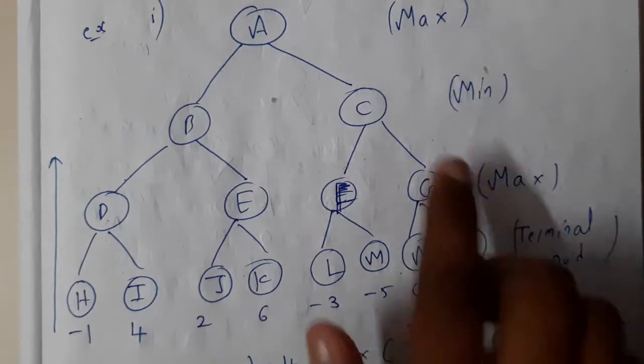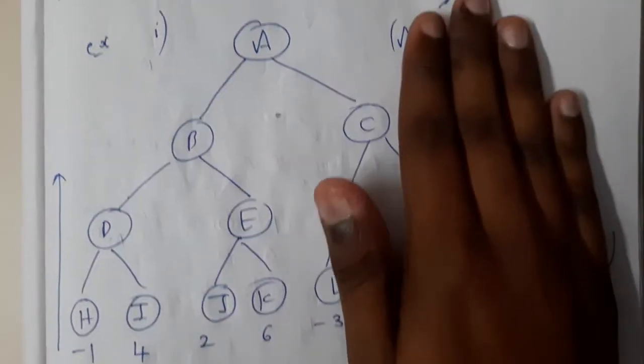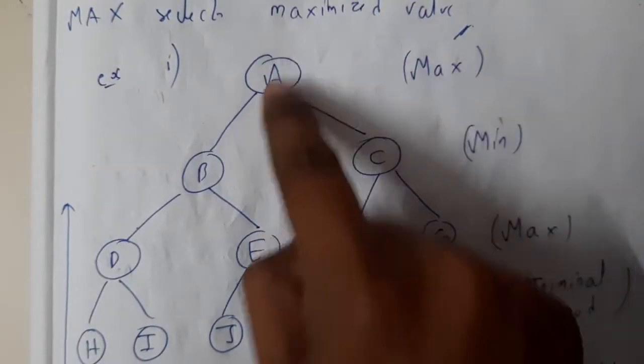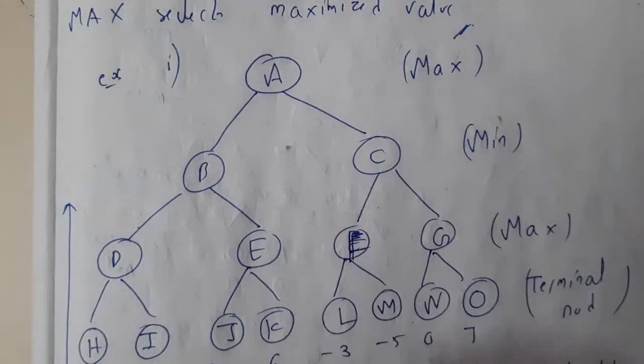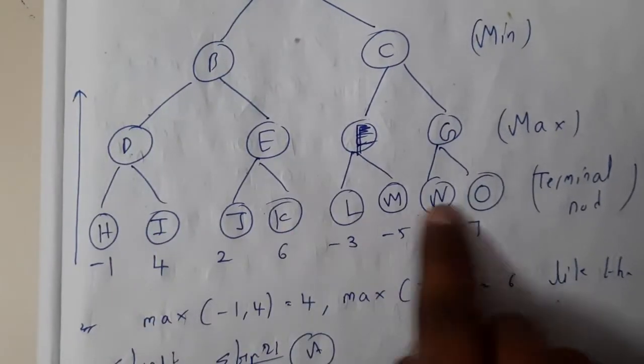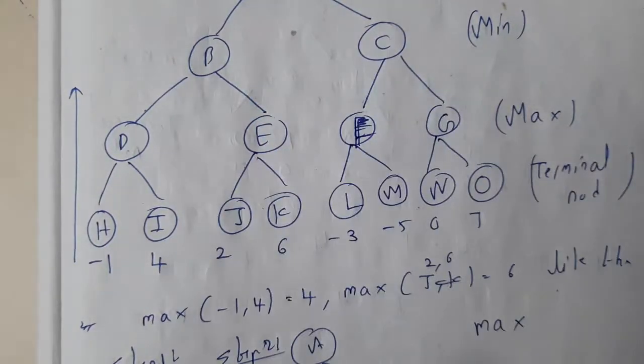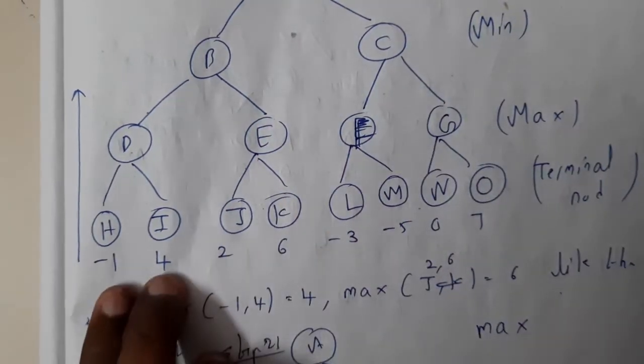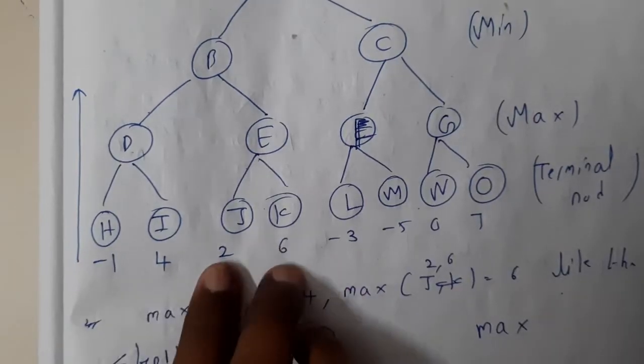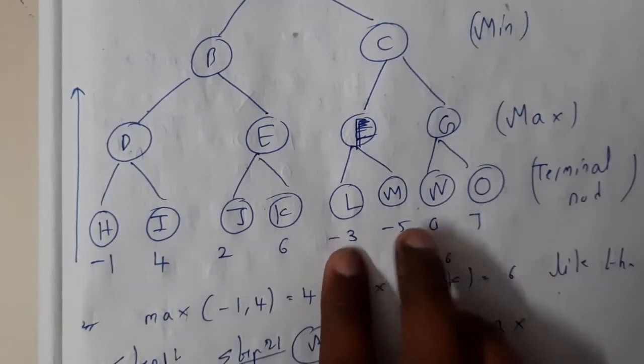We are here, so above that we are having the max layer. We will be taking the maximum value. Step one will be max of these two to calculate four, max of these to calculate six, max of these two - if both are negative, the least negative value minus three.